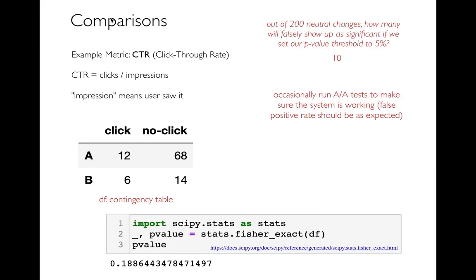Another thing to think about is whether your whole testing framework is giving you reasonable p-values. We have to make all these decisions — like how do we split up our traffic into version A or B. A best practice is that you should run AA tests, where A and B are exactly identical, and make sure that only 5% of those AA tests show up as significant if we set our p-value threshold to 5%. If we're getting a lot more or a lot less than that, we know we did something really wrong in our framework — maybe we aren't dividing traffic fairly, or the experiments are interfering with each other.